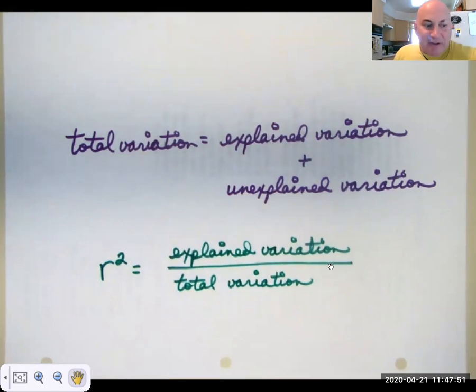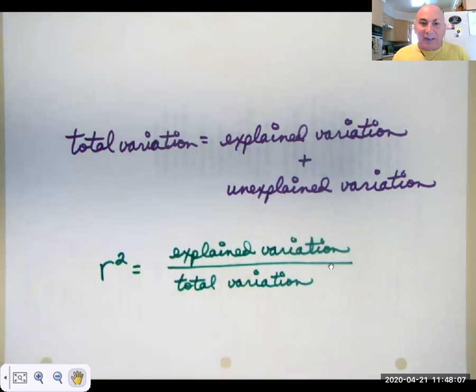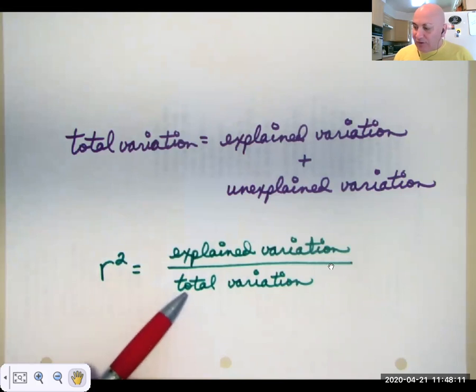Total variation is really a measure of two things. It's your explained variation and your unexplained variation. And r squared gives us a measure of the ratio of those. It's a percentage or fraction of explained divided by total. So what fraction of the total is explained variation.